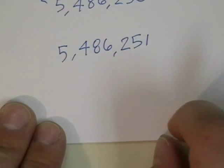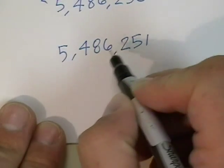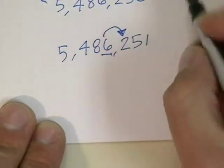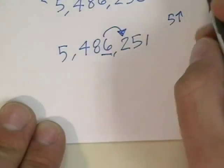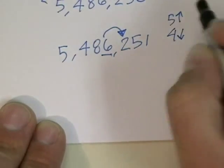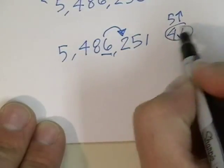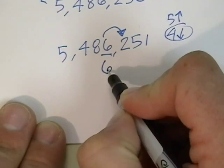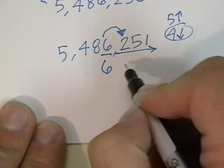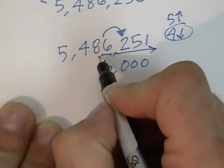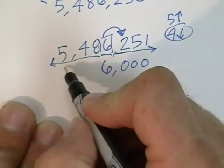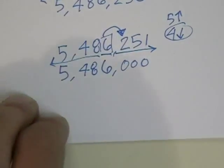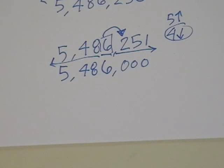If we're rounding to the nearest thousands, we find the thousands place — ones, tens, hundreds, thousands — and underline that. We look to the neighbor to the right. If it's 5 or more, we'll add one more. If it's 4 or less, we'll just bring this down. A 2 is 4 or less, so we just copy the 6 down. Then all these digits become zeros, and all these digits to the left of the 6 we just bring them down. So we have 5,486,000. That's how you round to the nearest thousand.